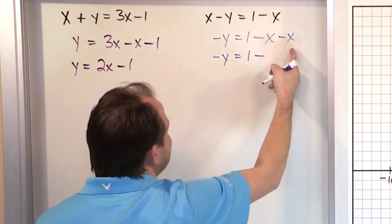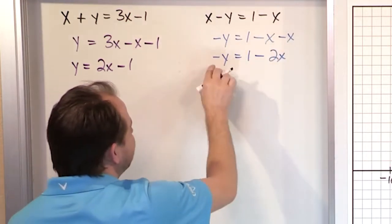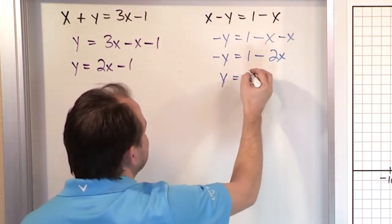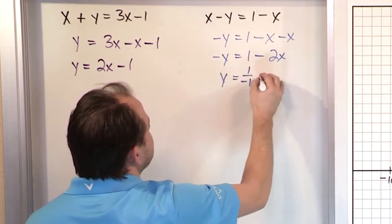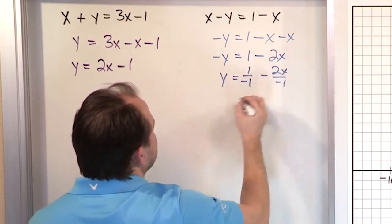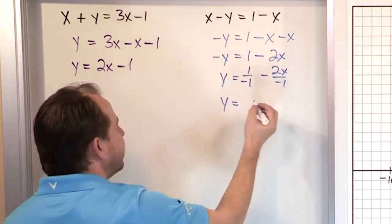Minus x minus x is going to be minus 2x. But I have this negative sign. So I'm going to divide by negative 1. So 1 over negative 1 minus 2x over negative 1. So what do I have here? 1 over negative 1 is negative 1.